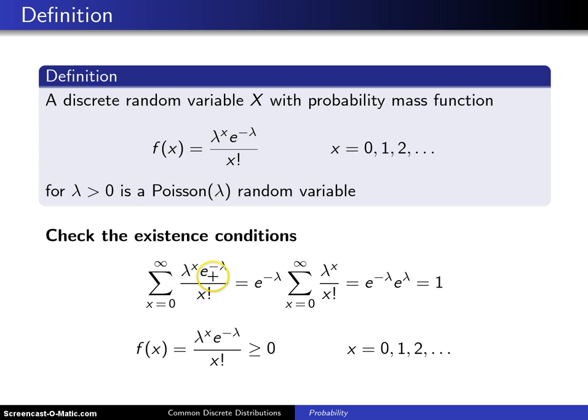Lambda to the x, e to the minus lambda divided by x factorial. You can see right away that e to the minus lambda can be pulled out front of that summation. What's left is the sum from x equals 0 to infinity of lambda to the x divided by x factorial.